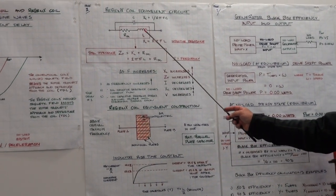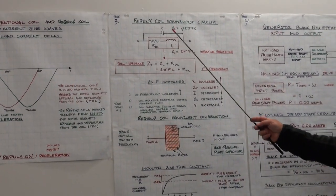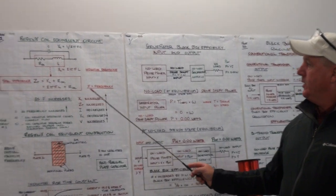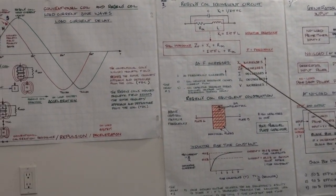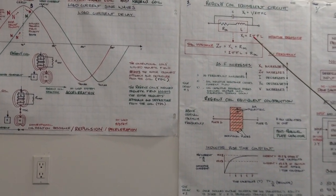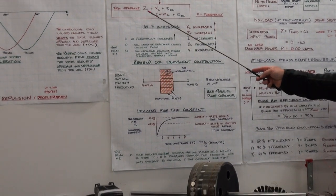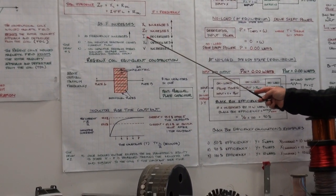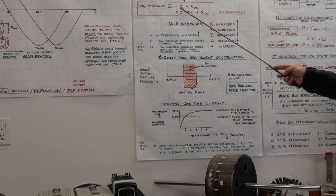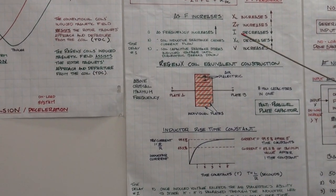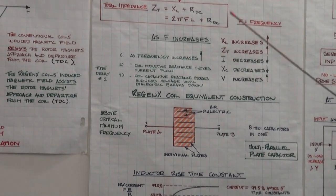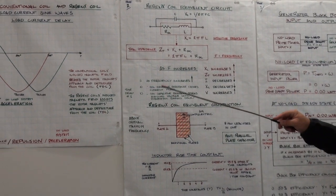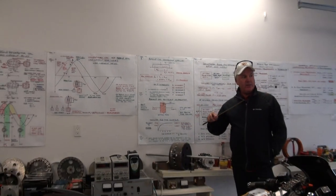At lower frequencies, a coil operates as an inductor and stores energy in the electromagnetic field around the coil. As frequency increases, the inductive reactance increases because it's a function of frequency. The total impedance of the coil increases — inductive reactance plus DC resistance — so the current in the coil decreases. The capacitive reactance of the coil goes down.